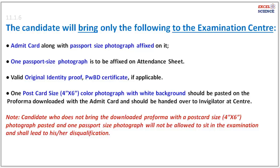You will have to carry your admit card along with a passport size photograph affixed on it. You will also have to carry one passport size photograph to be affixed on the attendance sheet, and a valid original identity proof along with other required certificates if applicable. Additionally, you must carry a postcard size color photograph with a white background, pasted on the proforma downloaded with the admit card, to be handed over to the invigilator at the center. A candidate who does not bring the downloaded proforma with a passport size photograph pasted, along with one passport size photograph, will not be allowed to sit in the examination and shall face disqualification.